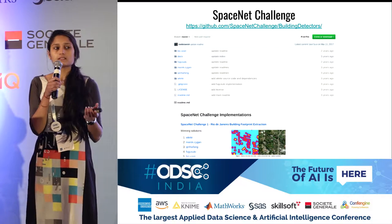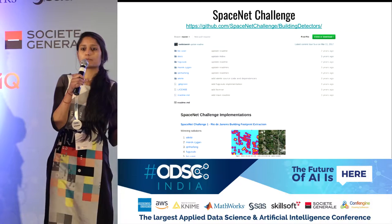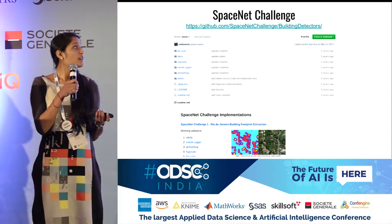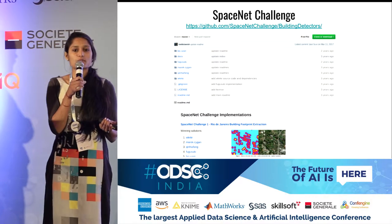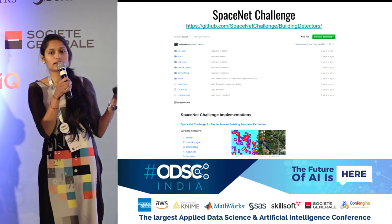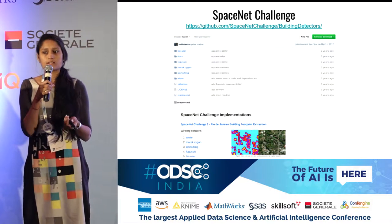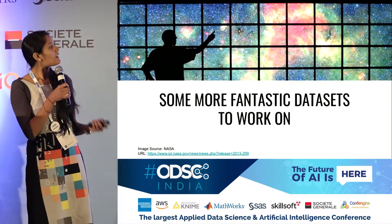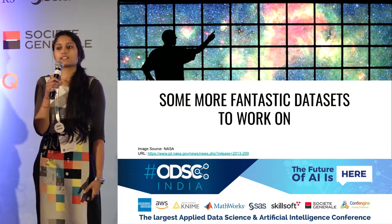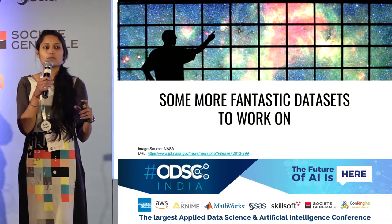I would want to introduce you to SpaceNet — a data repository of open satellite images through which they also encourage people to analyze these images. They have started a challenge called the SpaceNet Challenge. Every challenge is focused on some sort of analysis — the recent one was about building detection, and these are the winning solutions you can find in the GitHub repository. They publish their data in open and you can find research papers around these solutions as well. This was about satellite imagery, but there are various sectors that we at Civic Data Lab also work with, and open datasets are present across the world in different sectors.